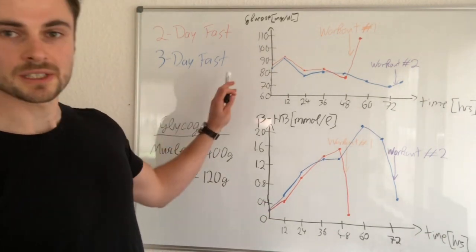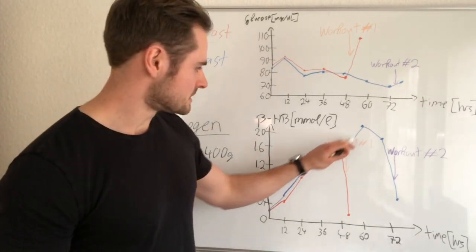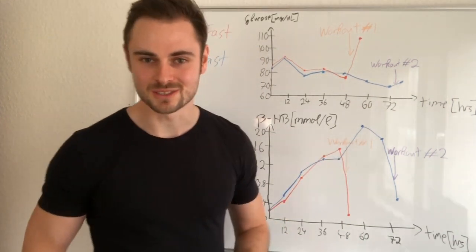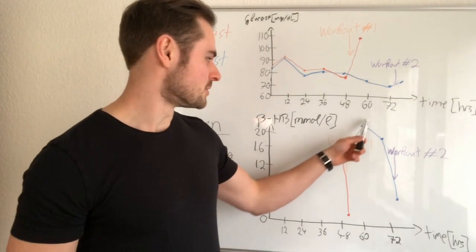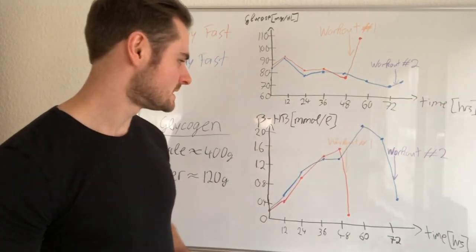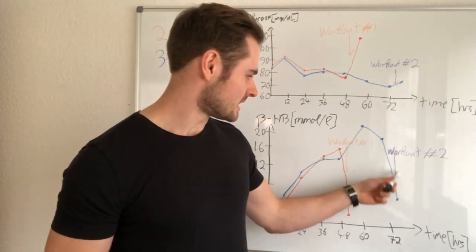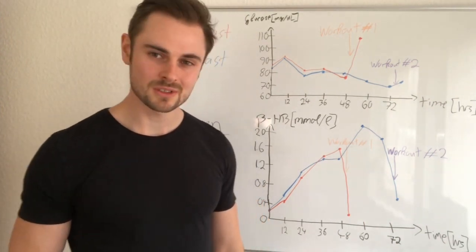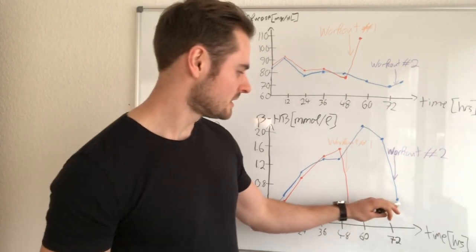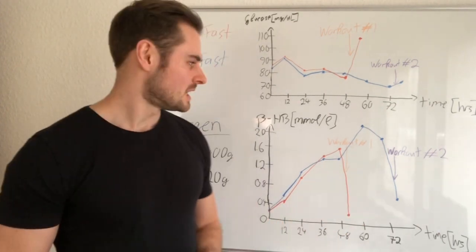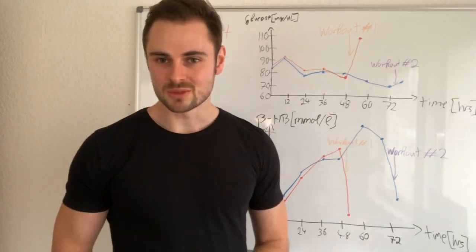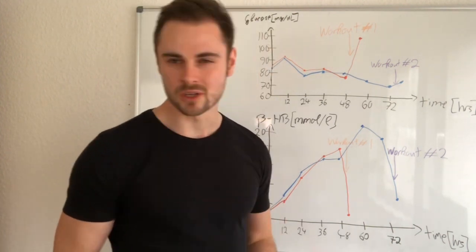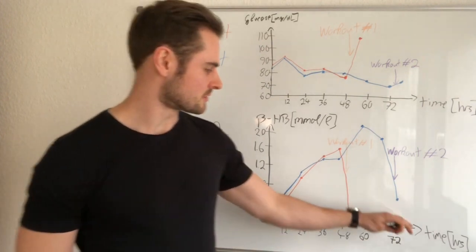The same was also true for the three-day fast, shown in blue, where I see a steady increase. I actually hit my record on ketone concentration - not surprisingly, it's a three-day fast - at about 2.2 millimoles per liter. Then when I went into the gym, this time it didn't really completely kick me out of ketosis. I went down to 0.8 millimoles per liter. I think the reason simply is because I had such high ketone levels in the blood. Maybe a longer workout would have kicked me out of ketosis.